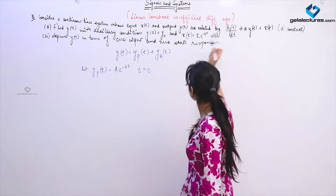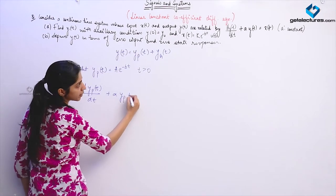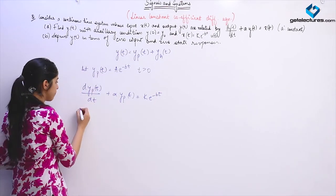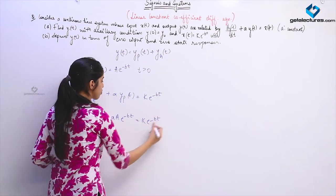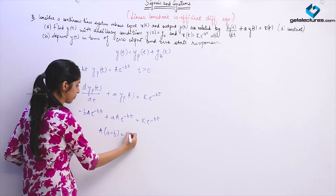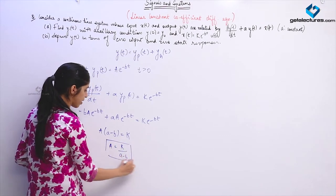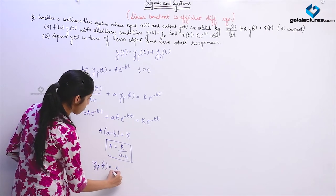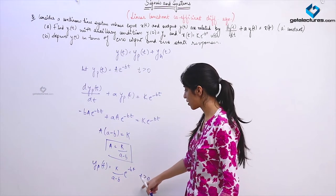If I put y_p(t) in the equation, dy_p(t)/dt + a·y_p(t) = k·e^(−bt). Substituting y_p(t) and cancelling e^(−bt) from the complete equation, I can find that A = k/(a−b). Therefore, the particular response of this equation is going to be k/(a−b)·e^(−bt), which exists for t > 0. This is the particular response of the system.